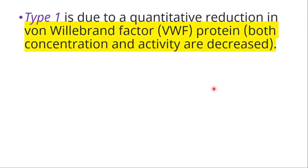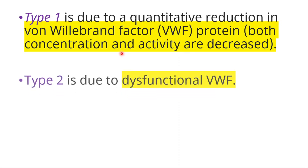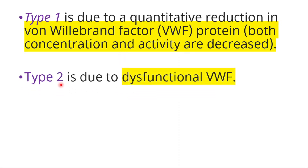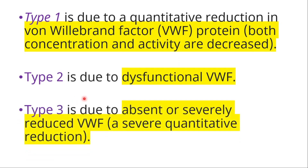We have three different types of von Willebrand disease. Type 1 is due to quantitative reduction in von Willebrand factor protein — both the concentration and activity of the protein are decreased. Type 2 is due to dysfunction of the factor. Type 3 is due to absent or severely reduced von Willebrand factor, with severe quantitative reduction.